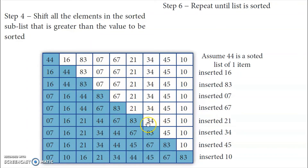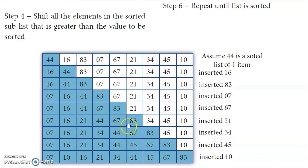The next element is 34. 34 has to find its place in the sorted sublist. Comparing from the first position: 7 — bigger. 16 — bigger. 21 — bigger. Then 44 — 34 is smaller than 44. So 34 has to be inserted before 44. The remaining elements in the sorted sublist shift one place: 83 shifts, 67 shifts, 44 shifts. 34 is inserted in the correct position. Now the first seven elements are sorted.